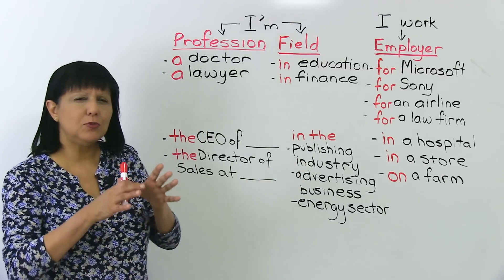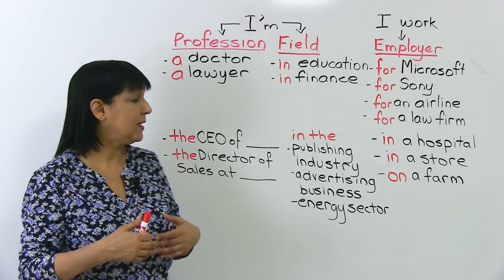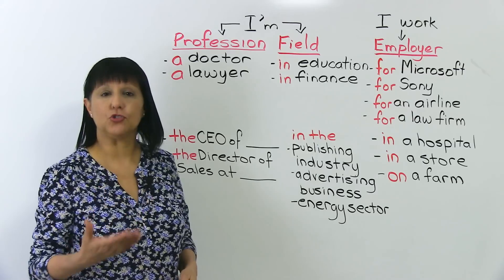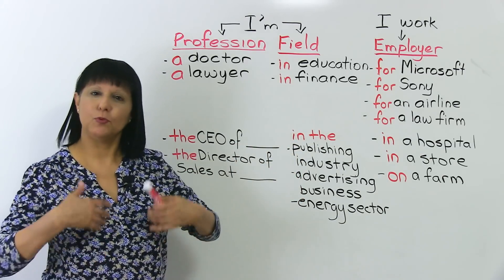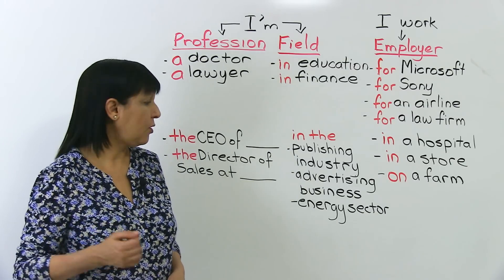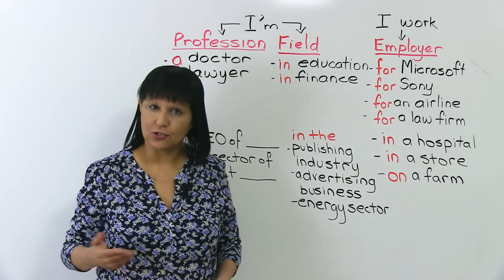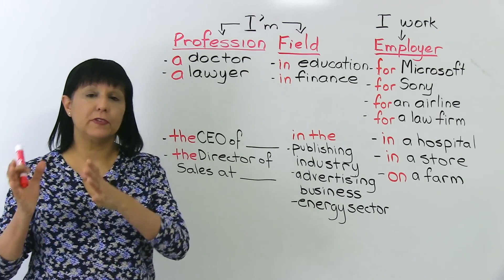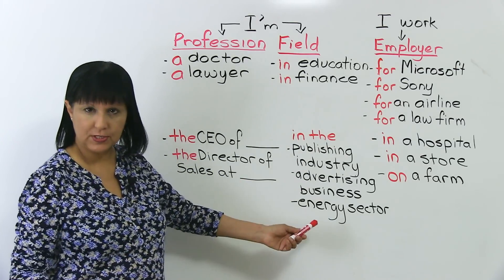If you want to express a little bit more about your field with slightly more advanced vocabulary, you could say I'm in the publishing industry — or just I'm in publishing. You could also say I'm in the advertising business, or I'm in the energy sector. Sector means a part of the economy. Or I'm in the public sector, which means you work for the government. Or I'm in the private sector.